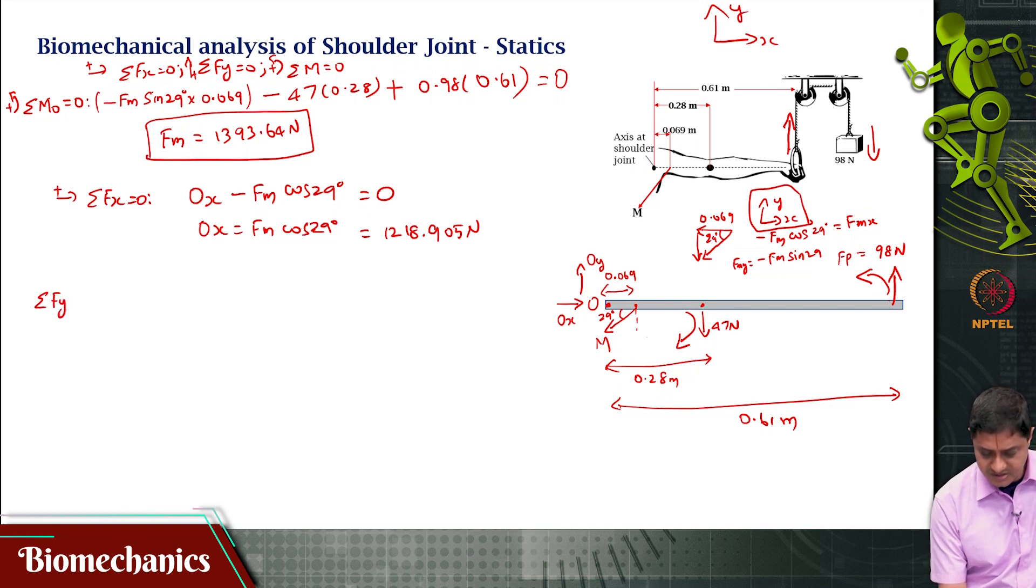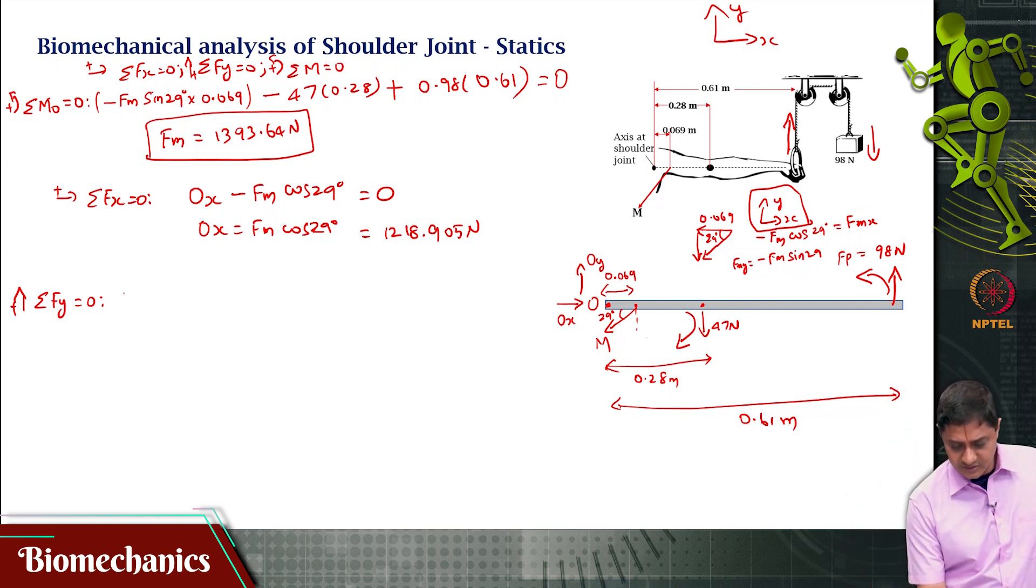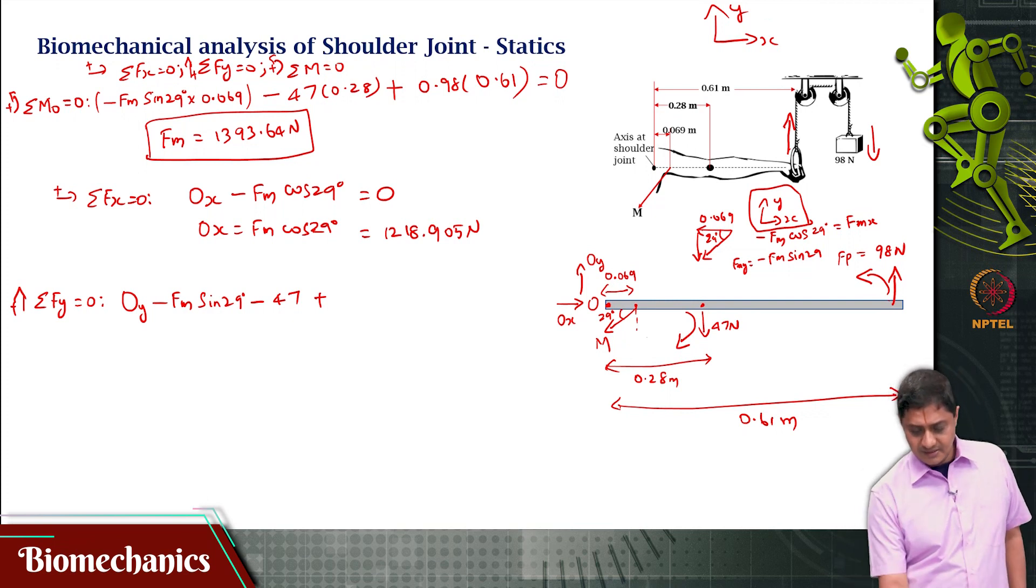And then, if I am interested in finding the reaction force OY, I write out sigma Fy equal to 0. So, that would be OY minus Fm sin 29 minus 47 plus 98. That is the force felt at the pulley 98, the whole thing is 0.